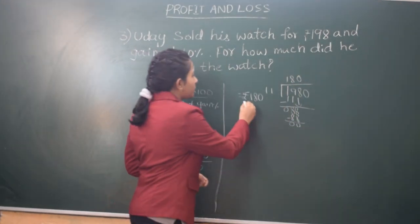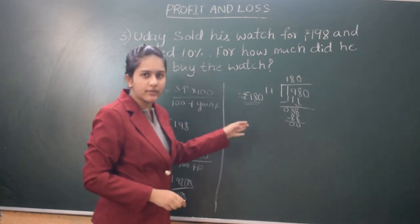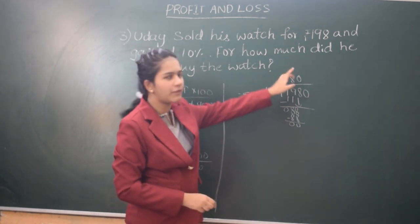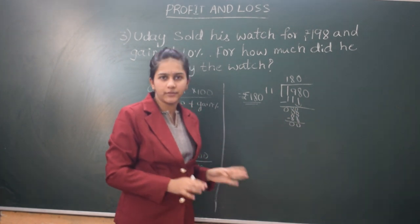The answer is Rs.180. Uday bought his watch for Rs.180 and sold it for Rs.198. So, his profit is Rs.18.